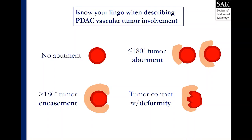You really want to know your lingo and understand your vocabulary when describing pancreatic ductal adenocarcinoma vascular tumor involvement. There's a very specific set of words radiologists should use when describing tumor contact. The term abutment describes tumor contact with the vessel of 180 degrees or less. The term encasement describes greater than 180 degree tumor contact with the vessel. And the term deformity describes any irregularity in a normal vessel contour regardless of degree of tumor contact — so whether less than or greater than 180 degrees, as long as the vessel shape is altered, we describe it as a deformity.